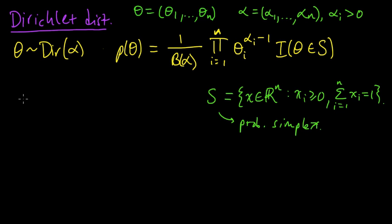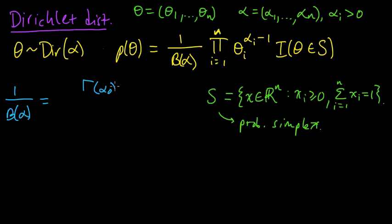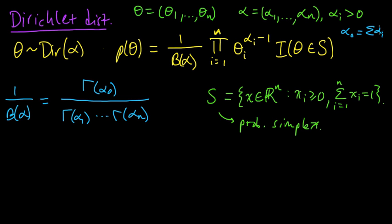The normalization constant, 1 over the generalized beta function of alpha, uses the gamma function. You can think of it as a generalized multinomial coefficient, analogous to a multinomial distribution. It equals gamma of alpha_0 over the product of gamma of alpha_i, where alpha_0 is defined as the sum of all the alphas, i from 1 to n.